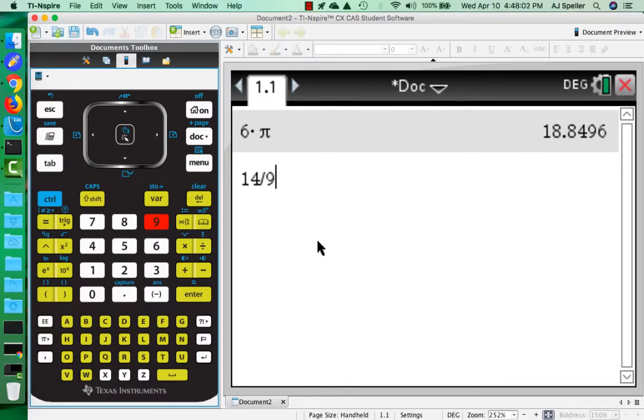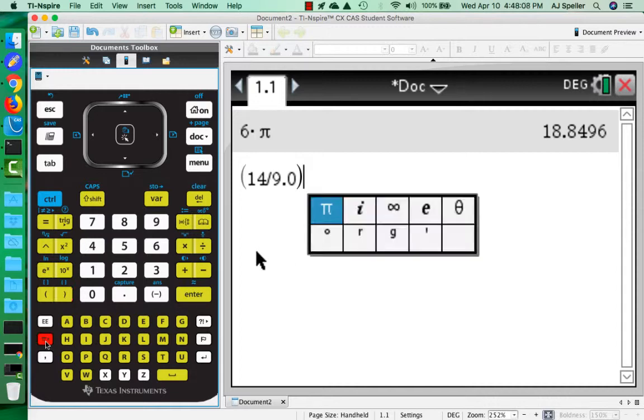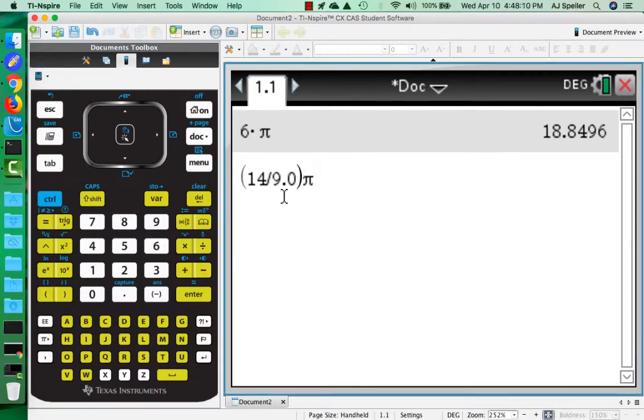So let's go back over. So here we're going to have 14 divided by 9, and actually what I can do is I can put 9.0 here. I'm going to put this in parentheses and then I'm going to multiply it by π. I put in the decimal point here, point zero, because now the calculator is going to automatically go into approximation. I won't have to click control and then the enter key to get to approximation.